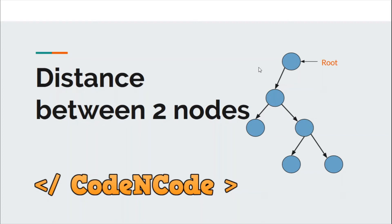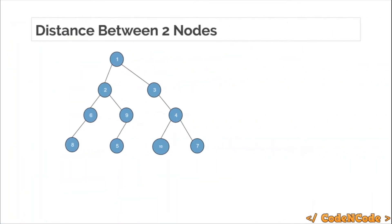Hello guys, this is Code and Code, and this is the fifth lecture of this graph theory series part 2. In this lecture we are going to see how you can calculate the distance between two nodes in log N time. You are given Q queries, and in each query you are given two nodes A and B and you have to find the minimum distance between those two nodes. Remember, this is for trees — this doesn't apply on graphs.